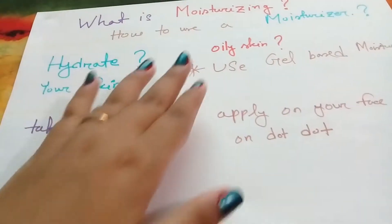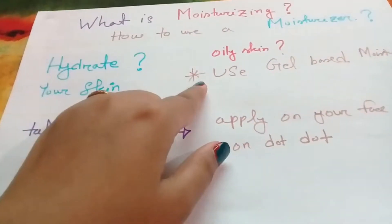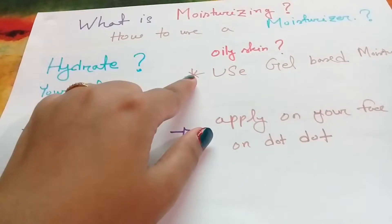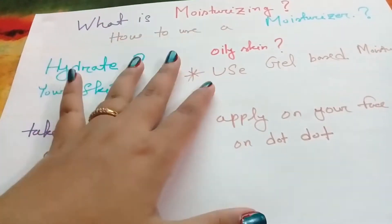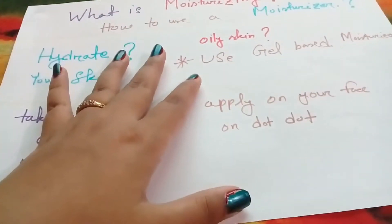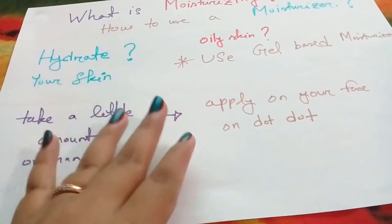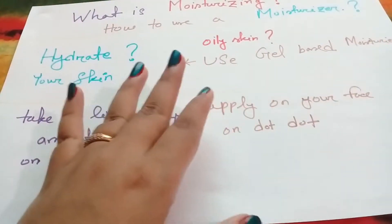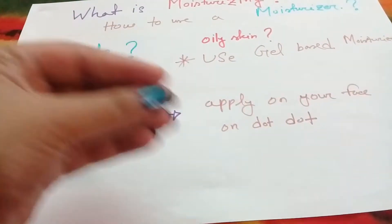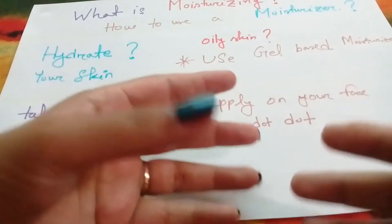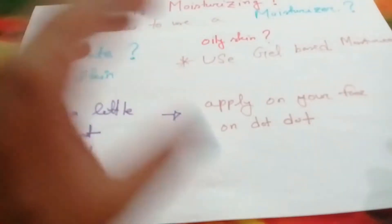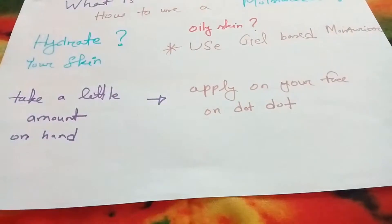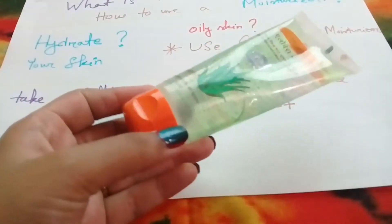So what do we need to do? We need to use a Moisturizer. You must remember to keep using the Moisturizer. Don't use just any Moisturizer carelessly, because it's not good for that skin type. Apply the right Moisturizer for your oily skin.